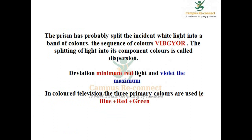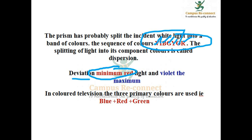As you can see, the light spectrum order is: violet, indigo, blue, green, yellow, orange, red. This is the order of light. The minimum deviation is for red light. The maximum deviation is for violet light.